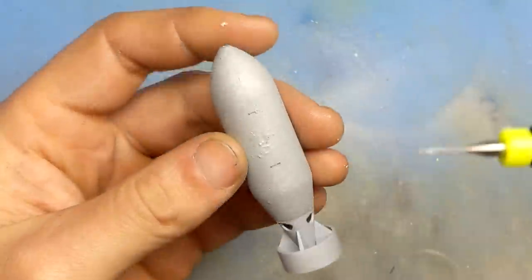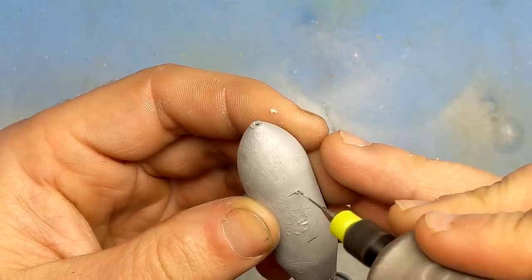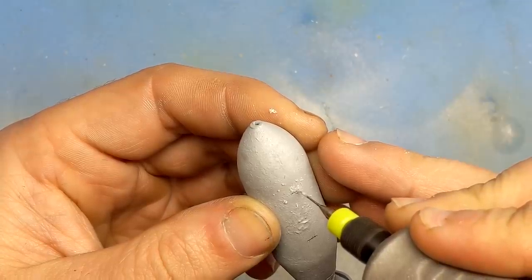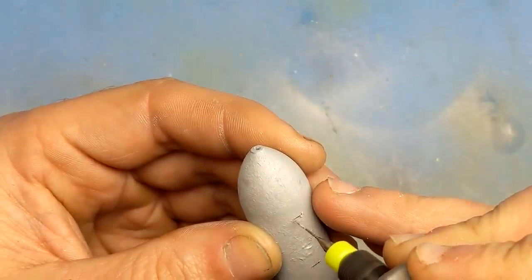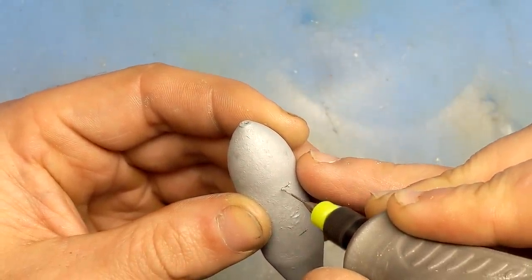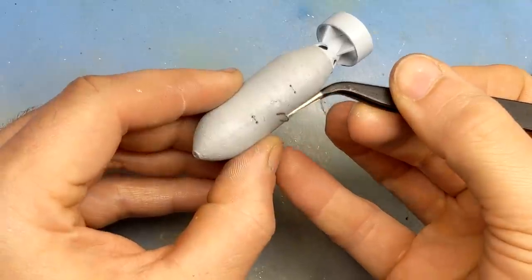I expected more detail with a 1:24 scale bomb so I decided to replace the block for alignment with the model and actually added the shackles with some solder wire. I plan on hanging one bomb from the aircraft model and the other one will be on display as part of the museum diorama I'm building.